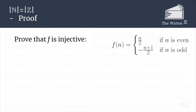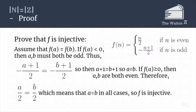Let's start by proving that f is injective. We assume there are two elements a and b where f(a) = f(b). We now deal with two cases: what if f(a) is less than zero, and what if f(a) is greater than or equal to zero? If f(a) is less than zero, then a and b must both be odd, because the only way to get a negative number out of our function is if n was odd. We can now replace f(a) and f(b) with their expressions knowing that a and b are both odd.